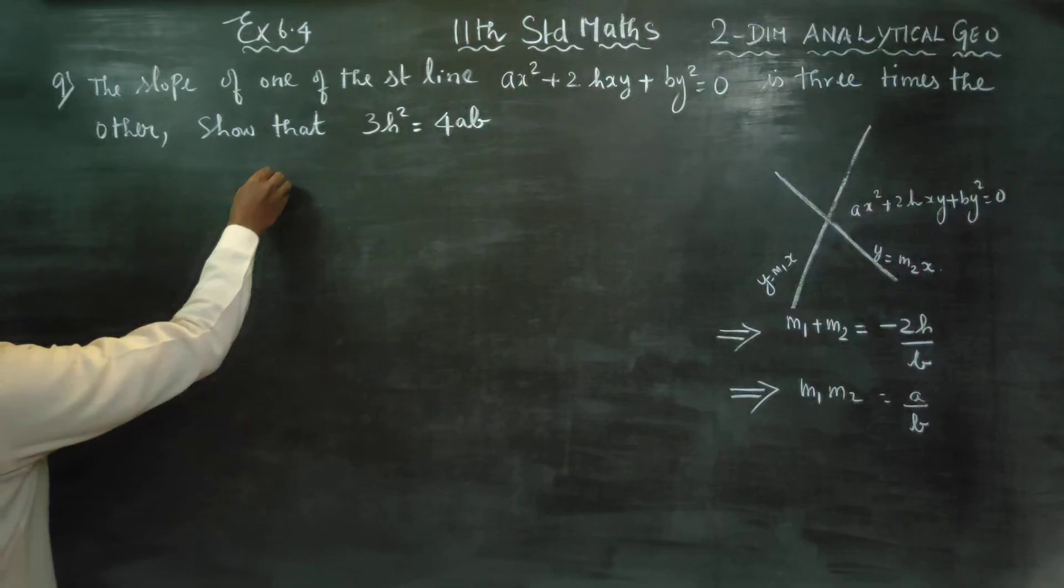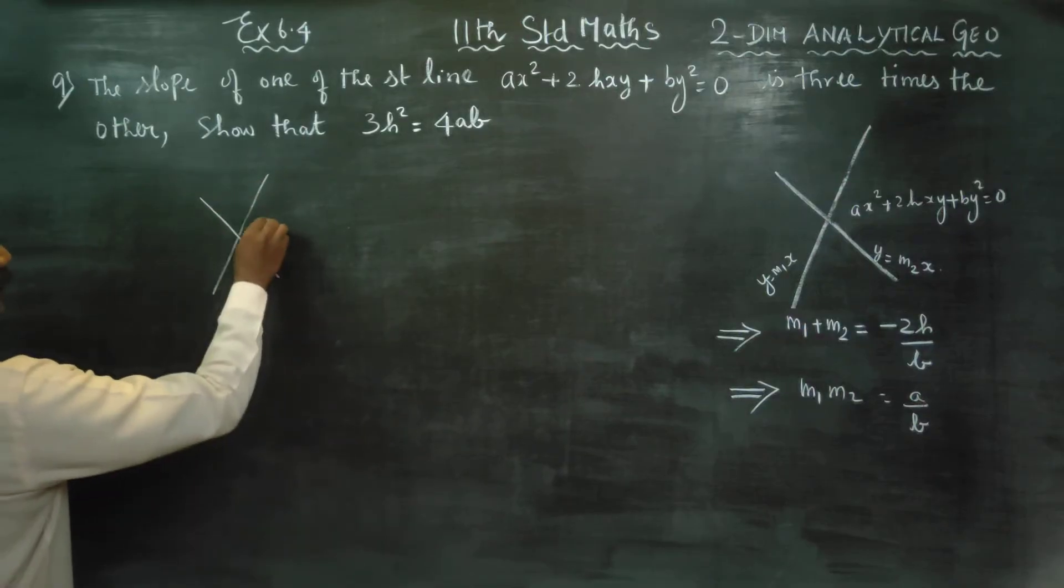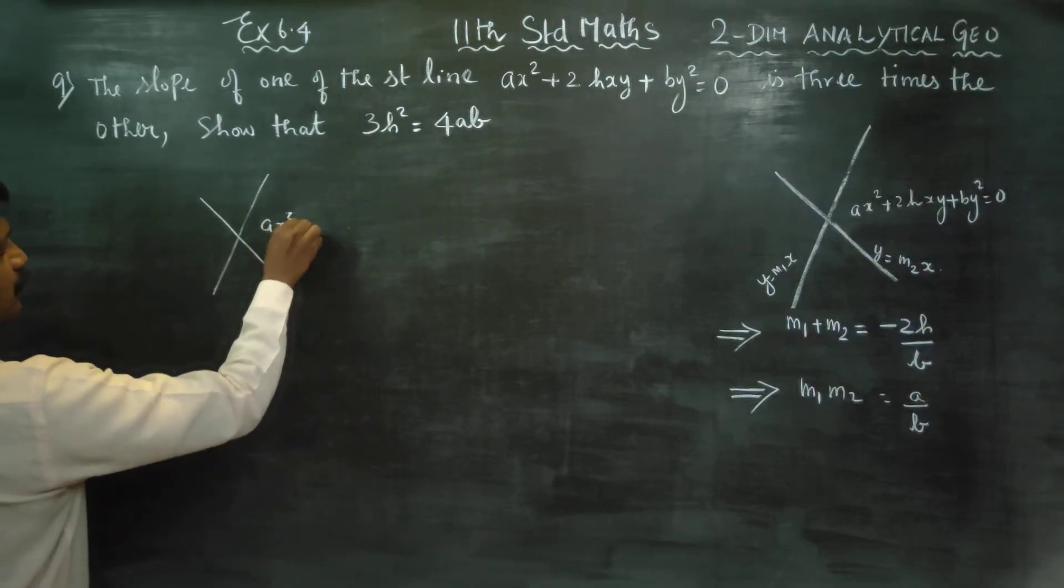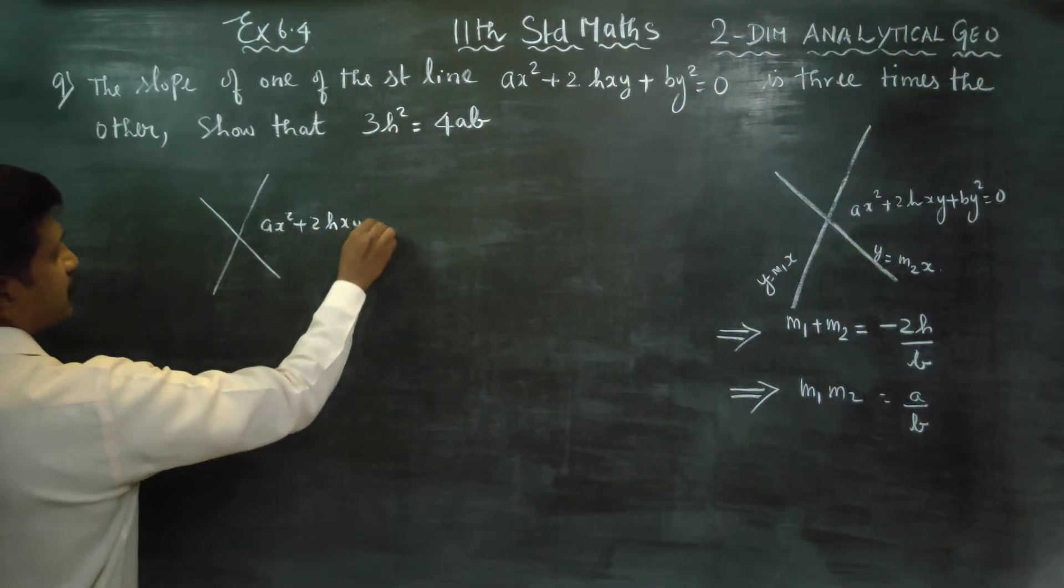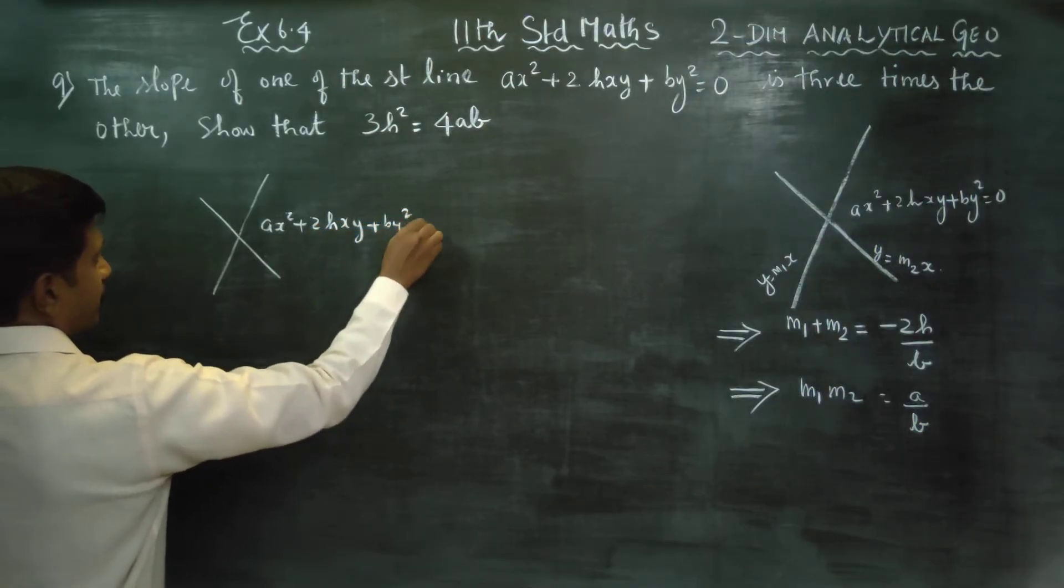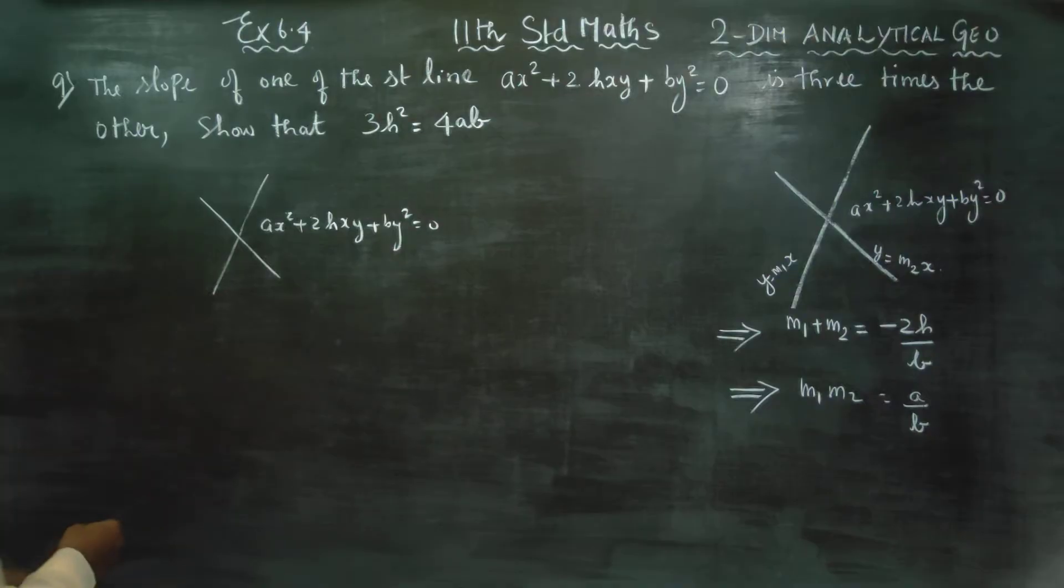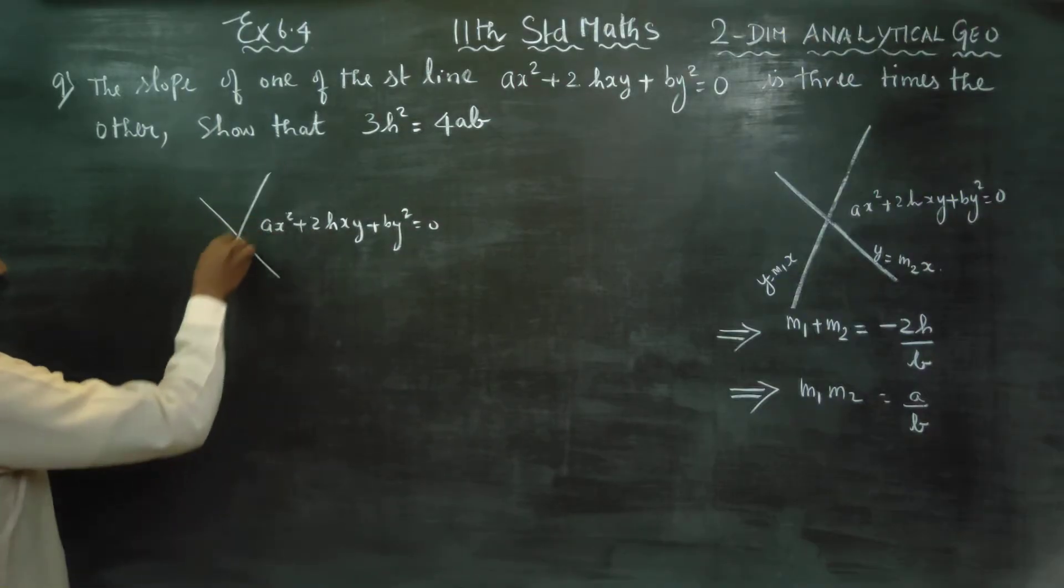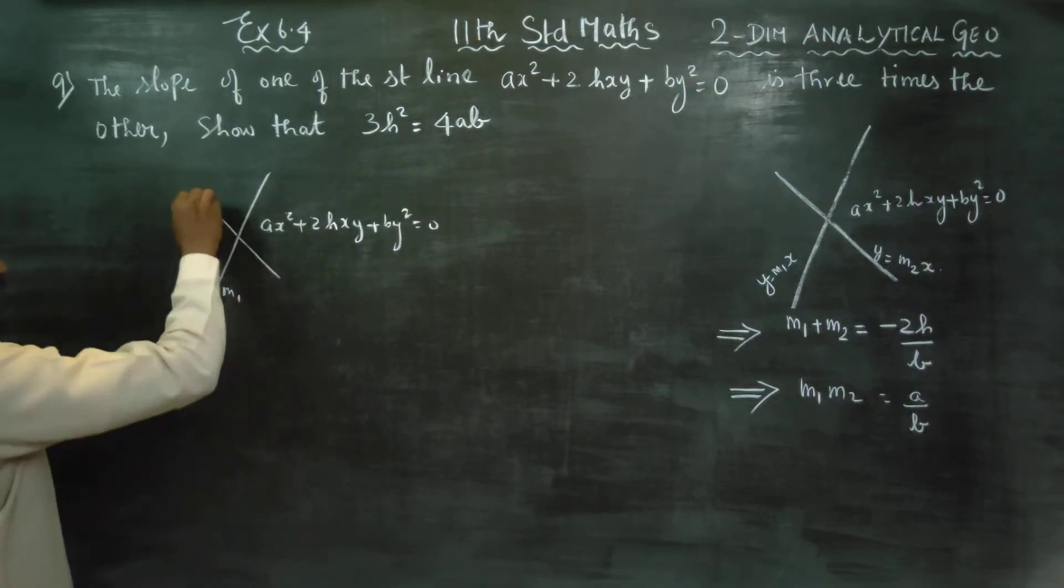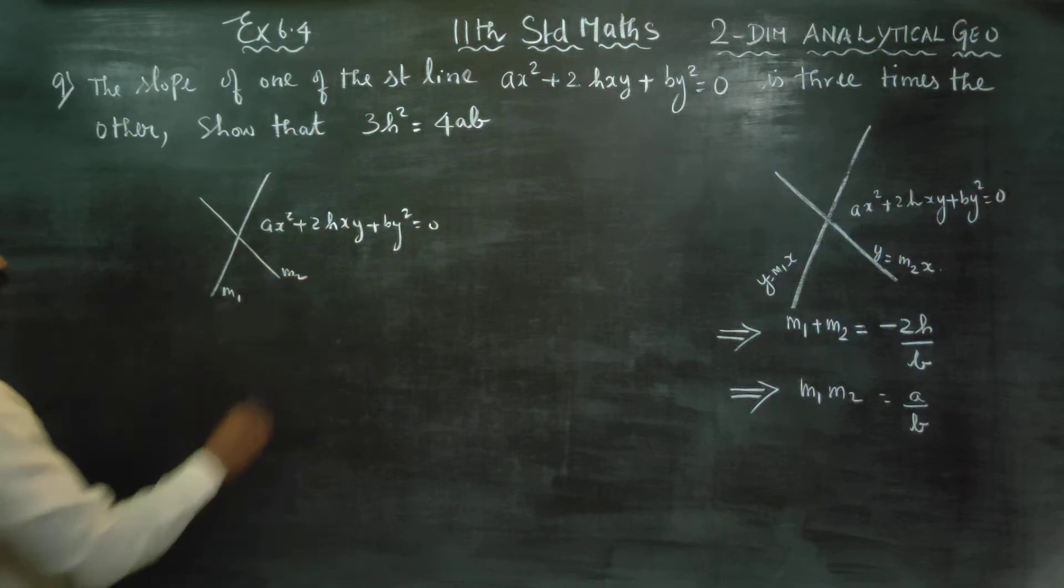A pair of straight lines on the way, ax² plus 2hxy plus by² is equal to 0. So, first straight line, slope number m1, this line slope m2, this line slope m2, ready-made formula.